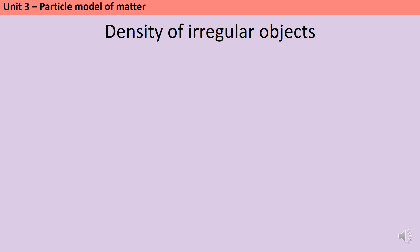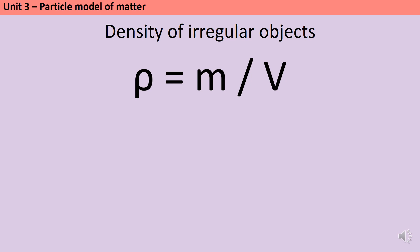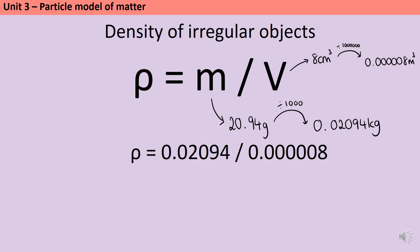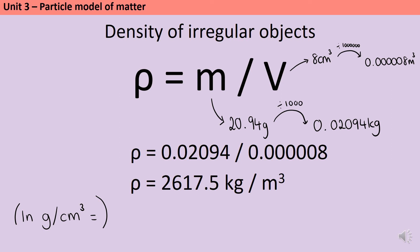Once you know the mass and volume of your irregular shaped object, you can calculate density in the same way as before: density is mass divided by volume. Begin by converting measurements into standard international units — for instance 20.94 grams becomes 0.02094 kilograms, and similarly the volume is converted into meters cubed. Dividing mass by volume gives a density of 2,617.5 kilograms per meter cubed. In some questions you won't be asked to use standard international units and you'll be told to keep your answer in grams per centimeter cubed, in which case you don't need to perform these conversions: 20.94 divided by 8 gives 2.6175 grams per centimeter cubed.